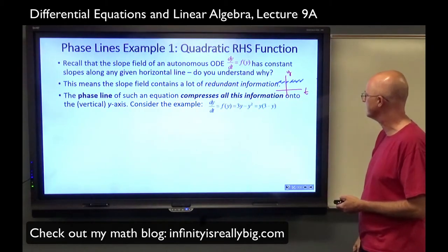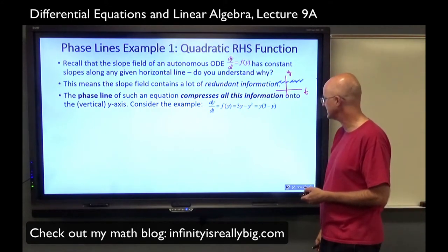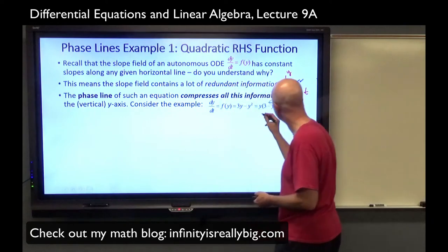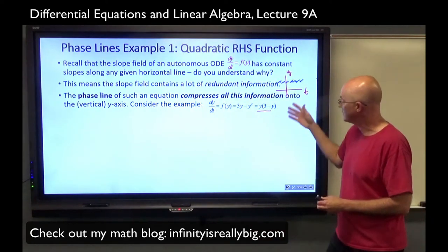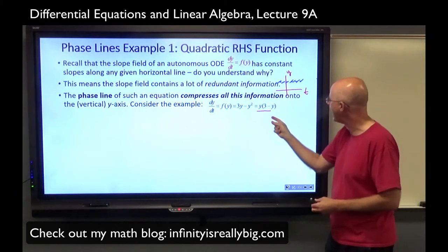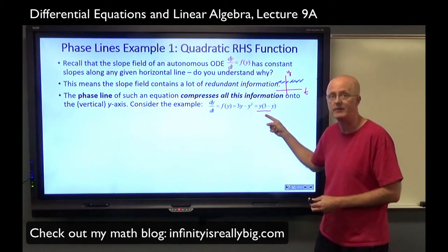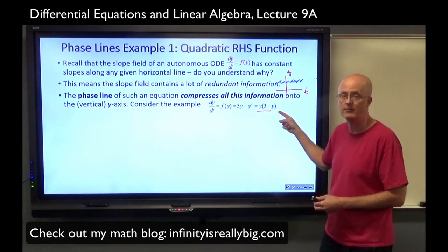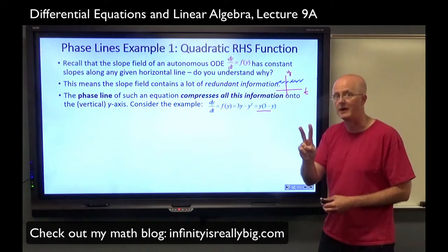Here's our example from last time: dy/dt equals f of y equals 3y minus y squared, which can be factored as y times (3 minus y). When you look at this kind of right-hand side function, right away you should think: that's autonomous, and I can quickly find equilibrium solutions by setting this equal to 0 and solving for y. You'd see that there are two of them, y equals 0 and y equals 3.